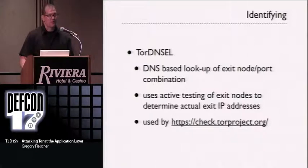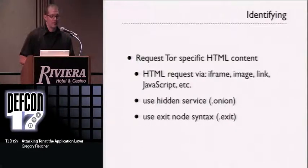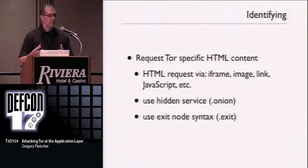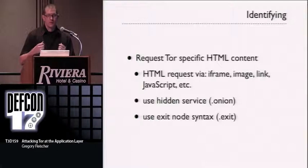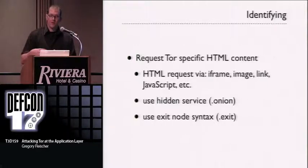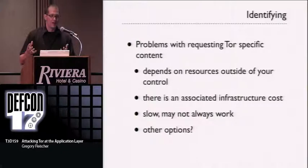There is a project called Tor DNS EL — an active testing exit list tool — that actively tests to determine what the real exit node IP addresses are being used to send traffic. The Tor Browser Bundle uses this at check.torproject.org. At a higher level, at the application layer, we can request specific content through HTML iframes, images, and links using special syntaxes Tor supports internally. To get to hidden services, you use .onion; to request through a specific exit node, you use fingerprint.exit. If a user is not using Tor, they won't be able to retrieve these resources.